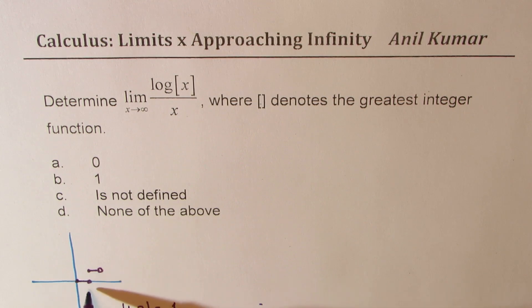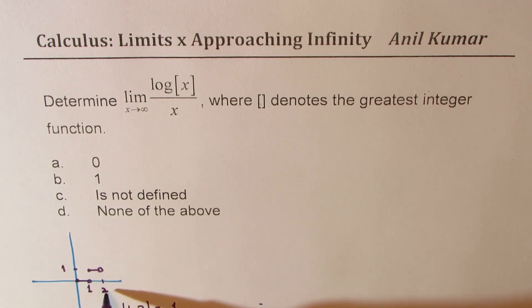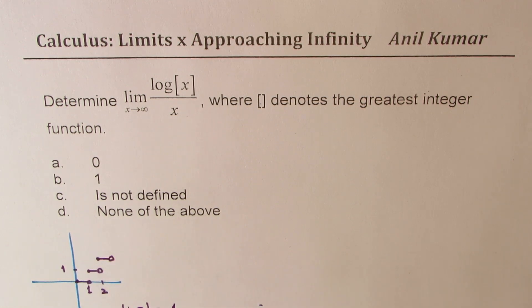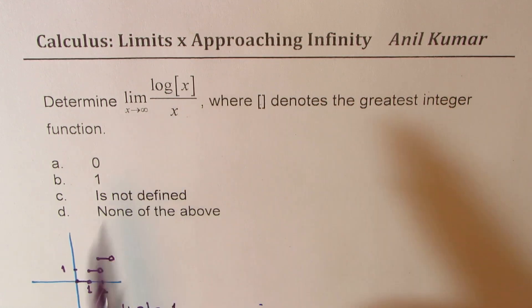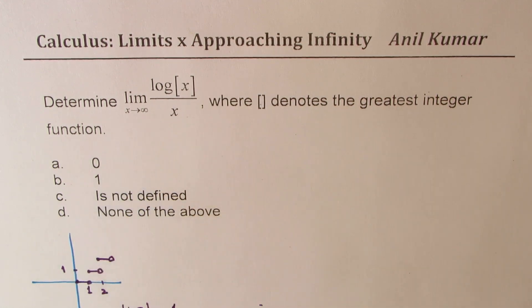So the graph of this will be kind of like this. This is open hole. At 1, the value will be 1. 1.2 will also be 1. But as soon as it reaches 2, then the value jumps to 2, like this. So that's the greatest integer function. We need to find the limit of this function as x approaches infinitely large value.